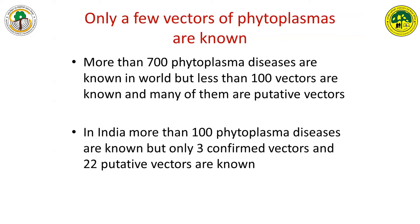In the world, more than 700 phytoplasma diseases are known — in fact, the bulletin mentions 1000. But only about 100 vectors are known. That means there is a disparity, and it is worldwide. Similarly, in India, about 100 or more phytoplasmas are known, but there are only three confirmed vectors. This shows the lack of information we have regarding the vector.